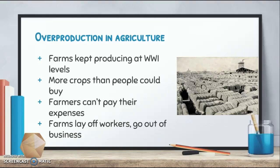Overproduction in agriculture happened in the 1920s. During World War I, a lot of food was needed to supply the war effort and America's allies overseas. Farms just kept producing the same amount of wheat and other crops even after the war ended. This is one of those things — farms were in trouble long before the stock market crash of 1929.